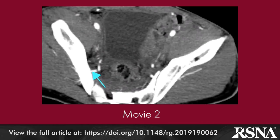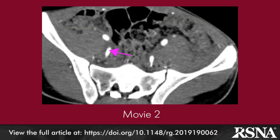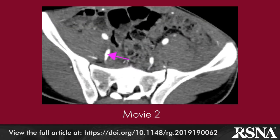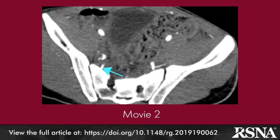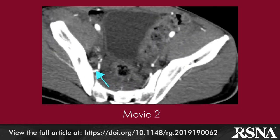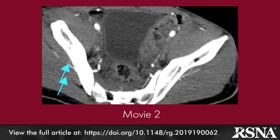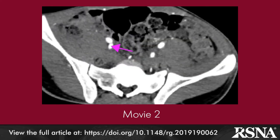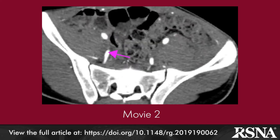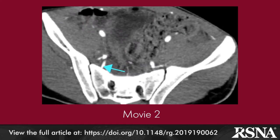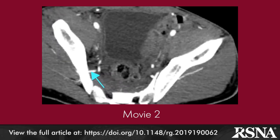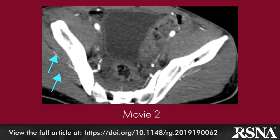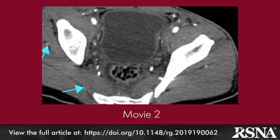An axial maximum intensity projection CT of the pelvis in the craniocaudal direction in a 31-year-old man shows a colored arrow that follows the course of an artery arising from the posterior division, lying anterior-inferior to the sacroiliac joint, curling under the greater sciatic foramen, and exiting the pelvis above the piriformis muscle, following a superior concave arch-like trajectory.